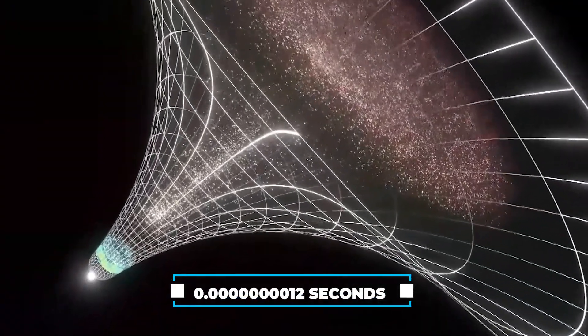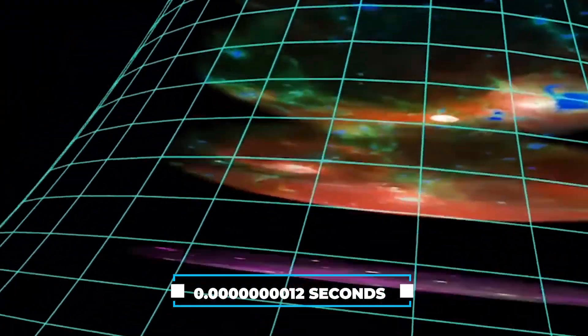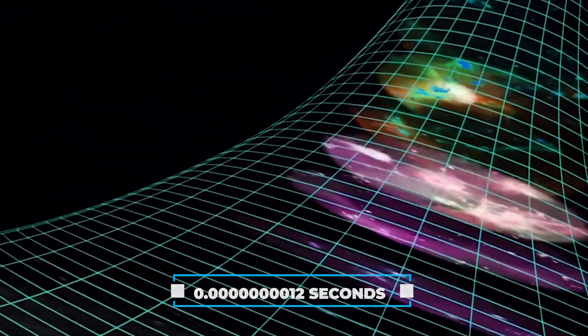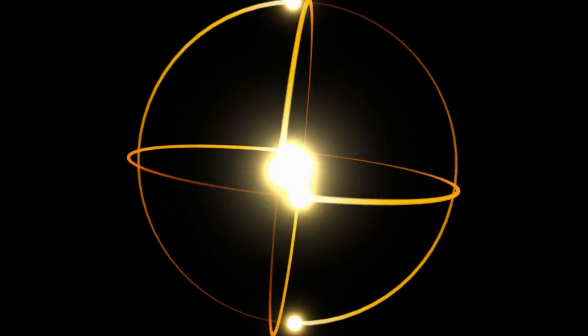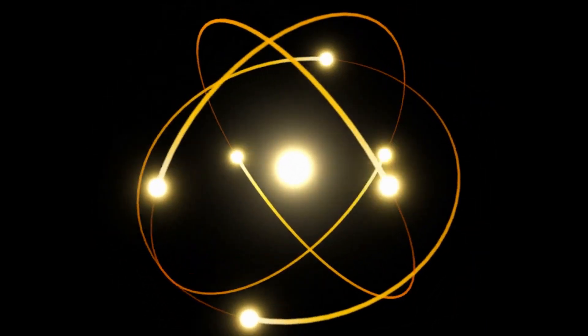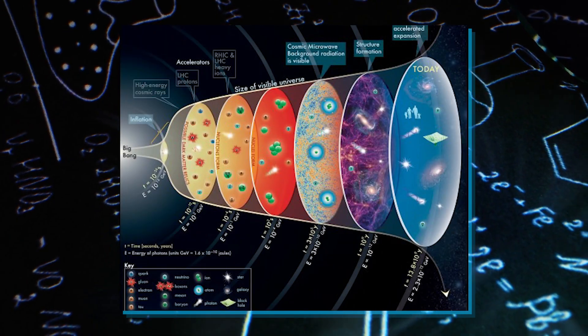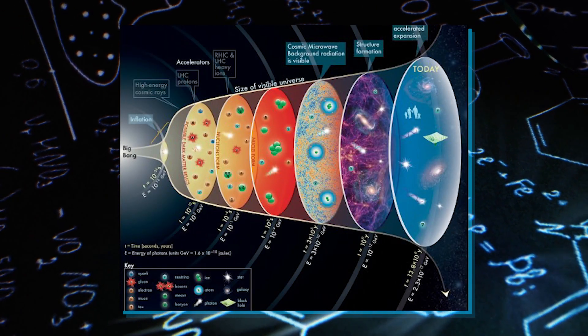Around one trillionth of a second after the Big Bang, electricity and the weak nuclear force began to separate, and the Higgs field appeared, giving particles mass. This Higgs mechanism shaped the building blocks of the universe.